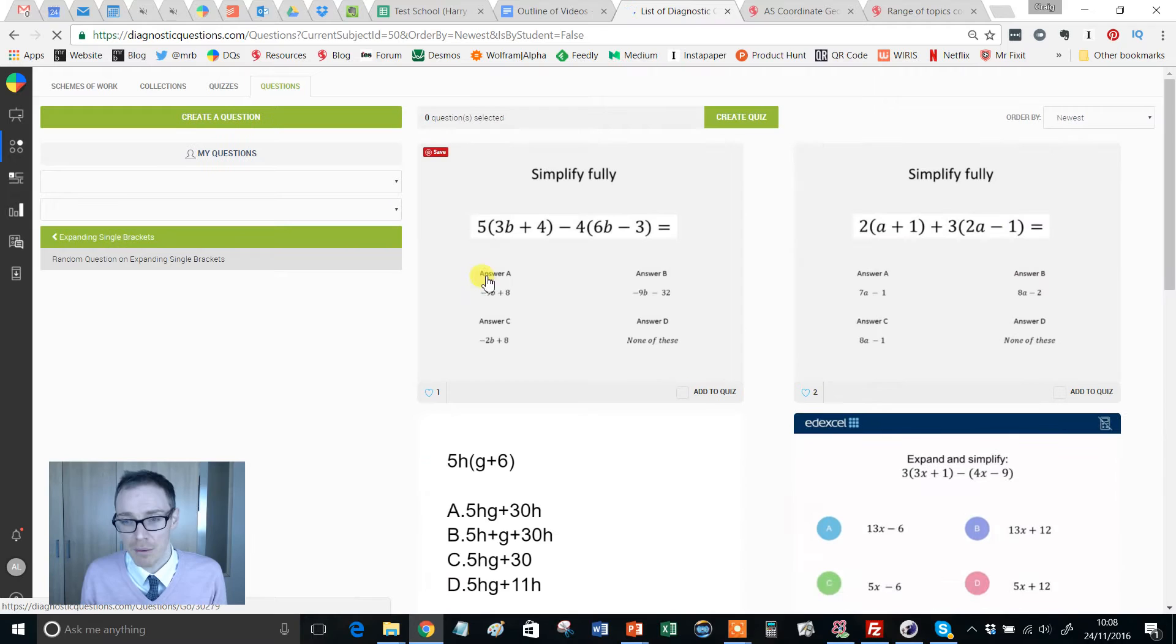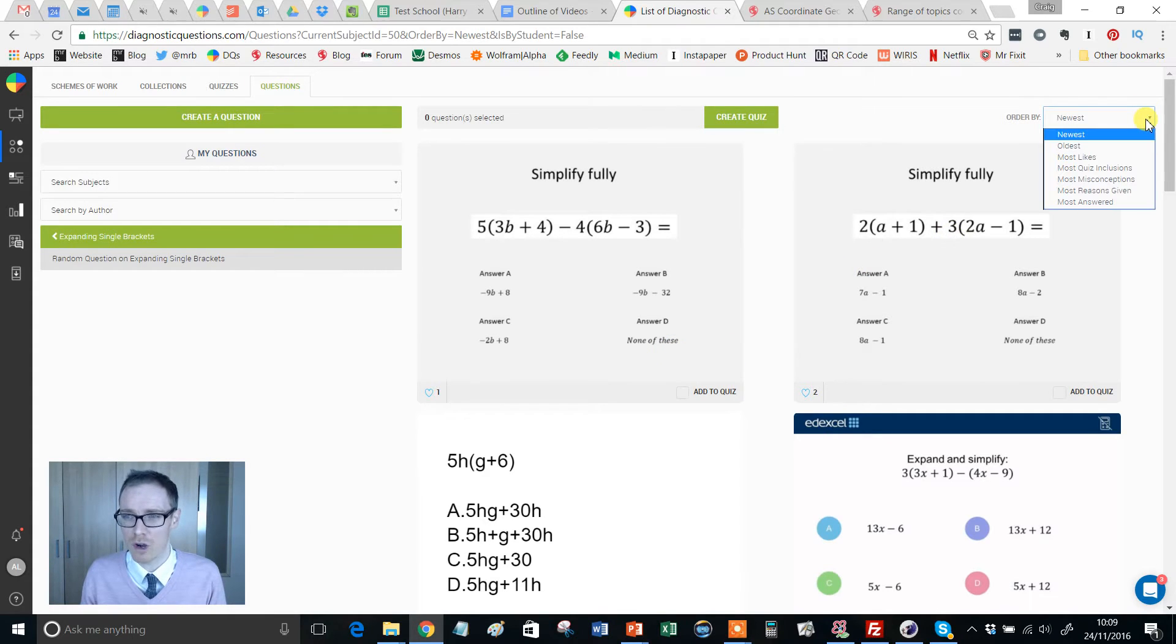And then we get our three choices. At the time of recording, there are 188 expanding single brackets questions. Give that a click and we're good to go. Now, as I say, by default this will list the newest questions, which might be absolutely fine for you. But you might want to sort them a different way. If we click this little drop down here, you'll get different ways of sorting it. And most likes is quite a good one.